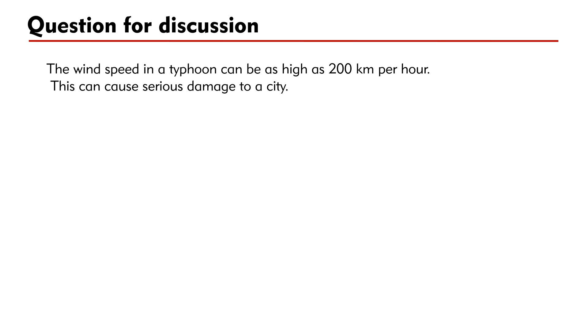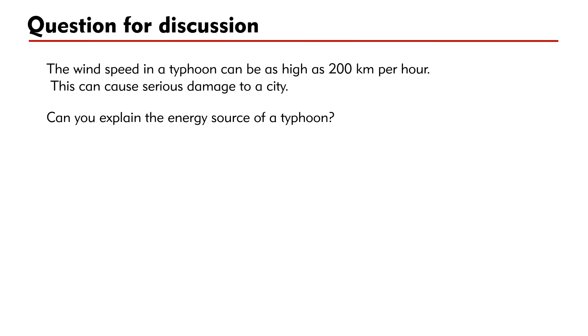The wind speed in a typhoon can be as high as 200 kilometers per hour, causing serious damage. Can you explain the energy source of a typhoon? Be the first to write your answer in the comments below — you are welcome to comment on others' answers. I hope this video helps you understand more about specific latent heat. Thank you for watching.